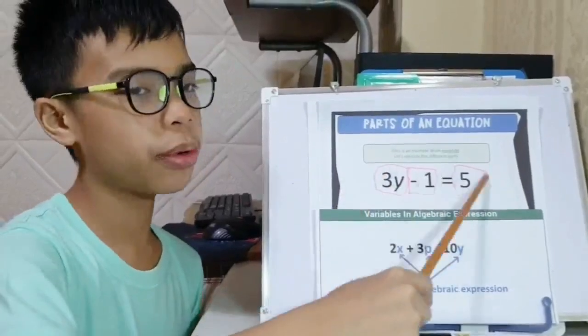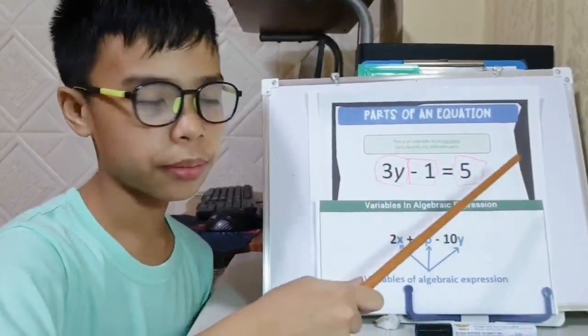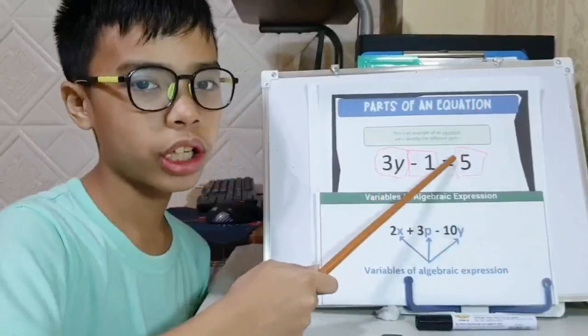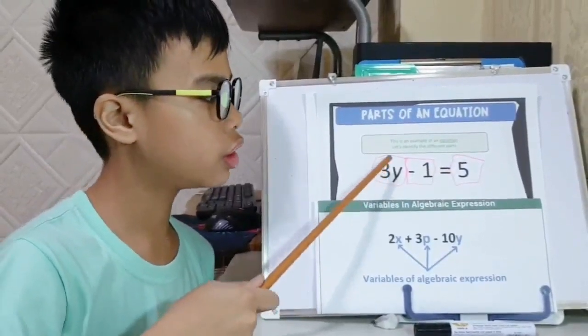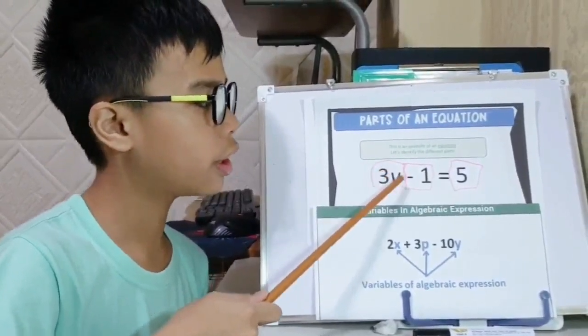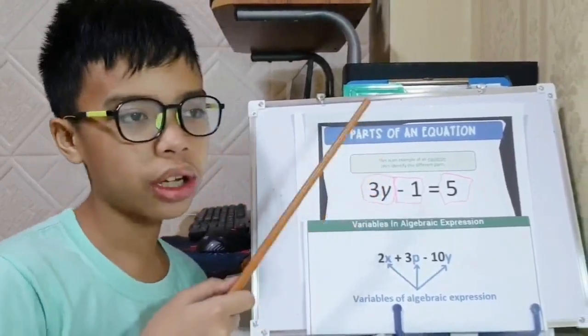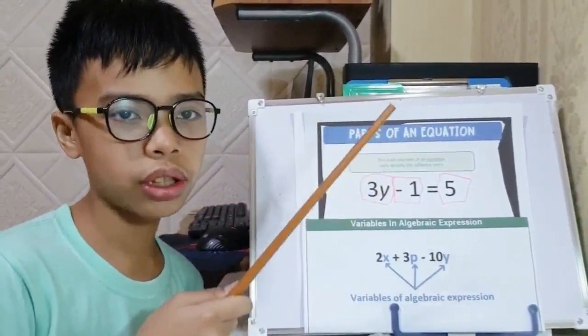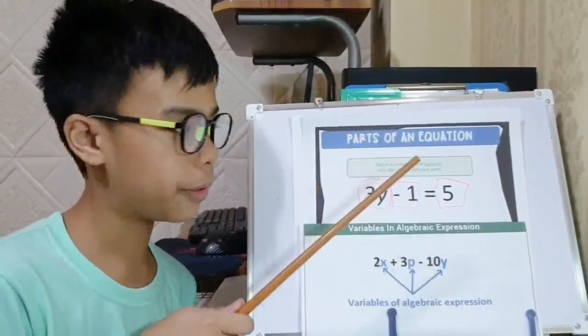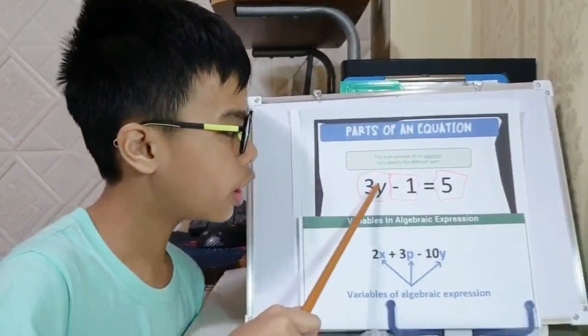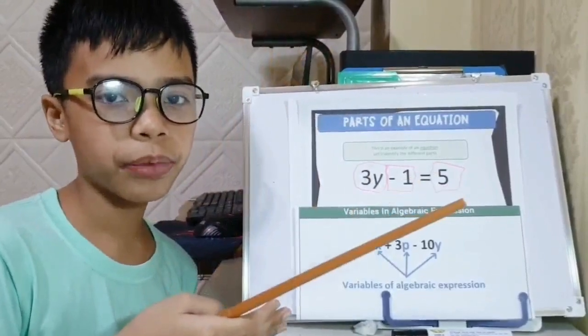This is an example of an algebraic equation. Let's identify the different parts, so I boxed them according to terms. Let's proceed to the first box. As you can see, there's the number 3, letter Y. The number 3 is called a constant - a constant is a quantity that never changes and at the same time it is a coefficient of Y. And the letter Y you see right here, it is called a variable. A variable is a letter that represents an unknown number.